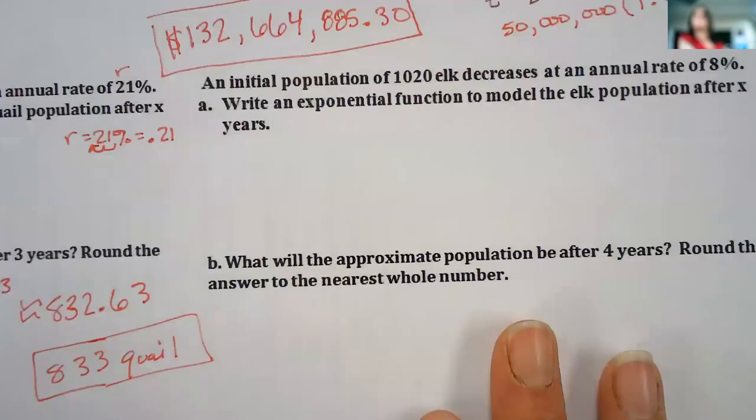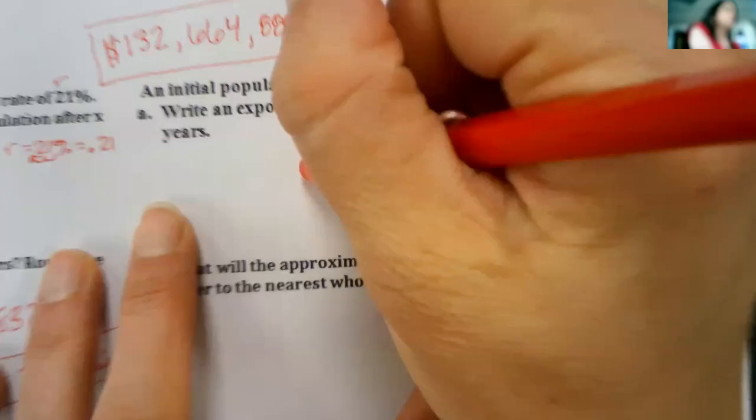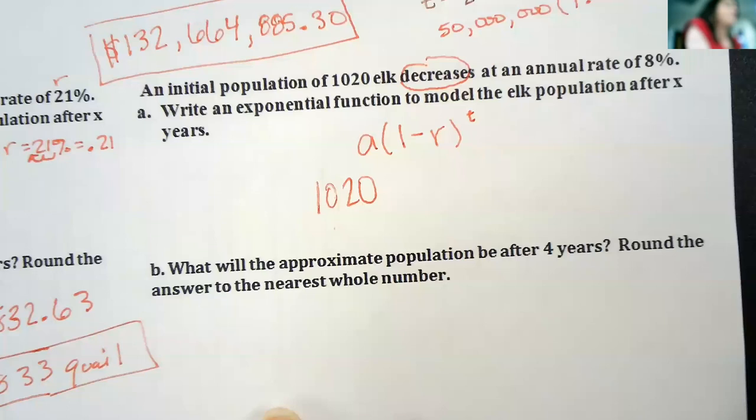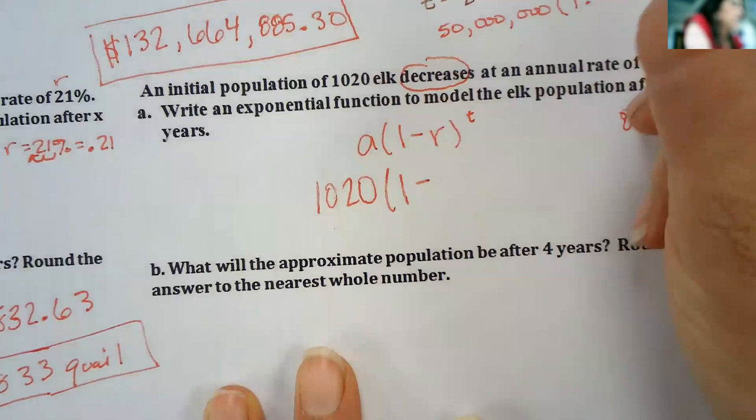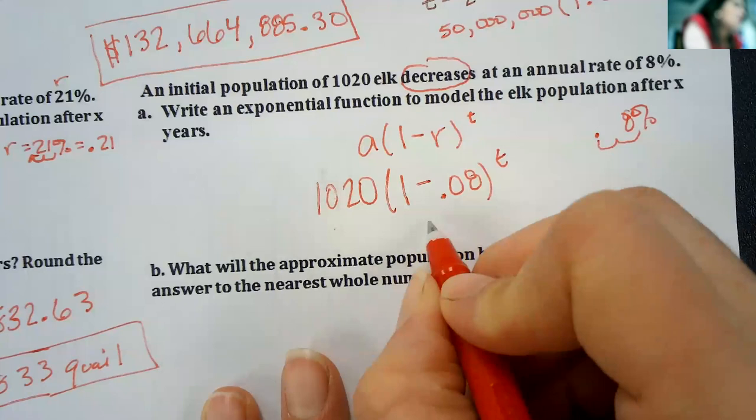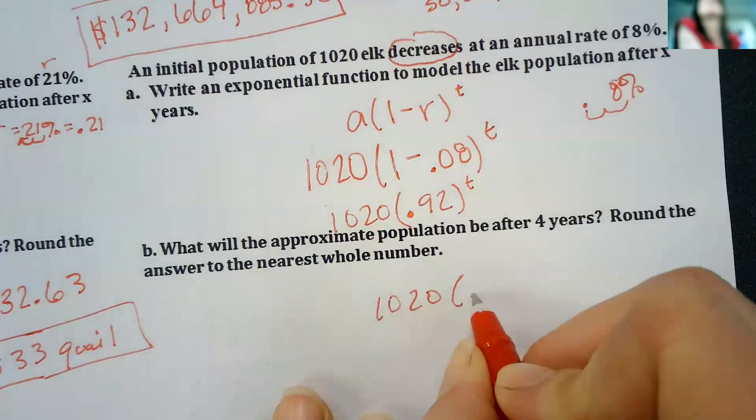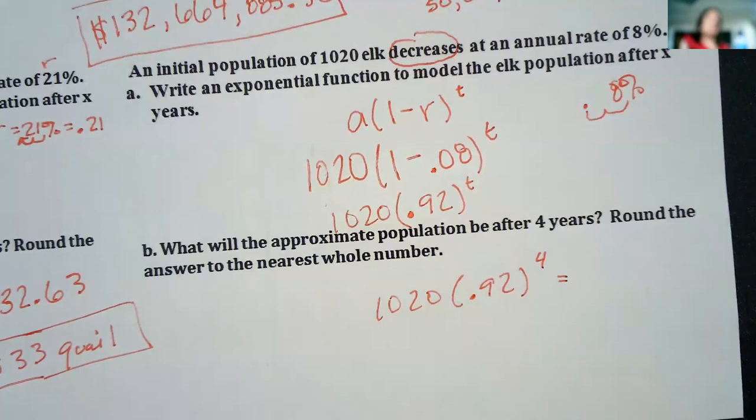Let's try another one. An initial population of 1,020 elk decreases. This time we're talking about 1 minus R. This one would be 1,020 times 1 minus .08. So if you're taking away 8%, it should make sense that this would be .92 because that would be 92%. And then we're going to evaluate it after four years. So you're going to take 1,020 times .92 to the fourth. Now we know it should decrease if we set it up correctly.